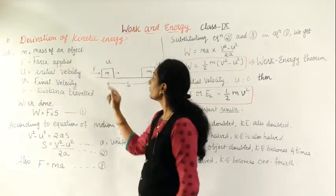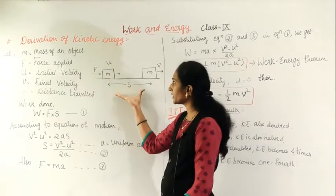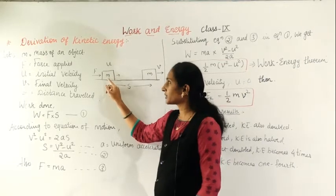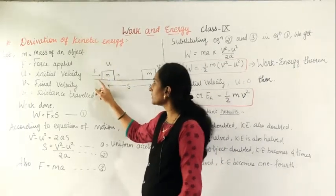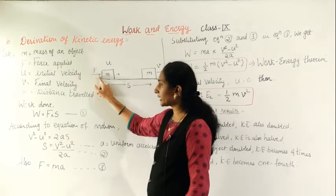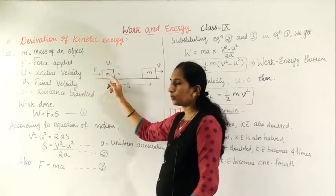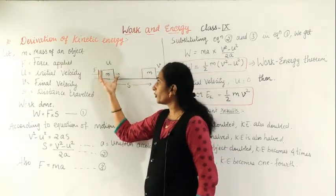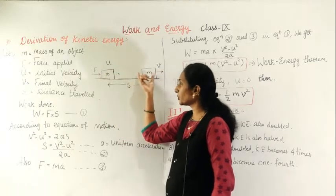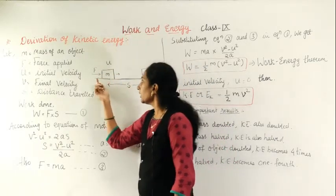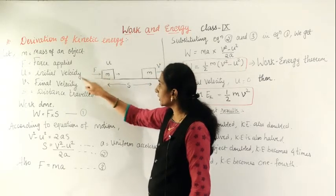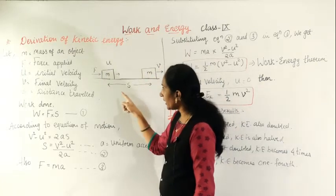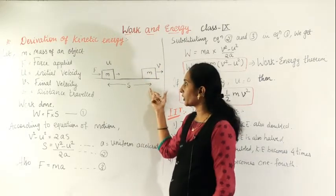Here is the derivation of kinetic energy. Look at this first figure. You can see there is a block with mass m. Now, if a force is acting on the block, it will move forward. So work is done — if a force is applied and the object moves from one position to another, work is done. Here F is the force.